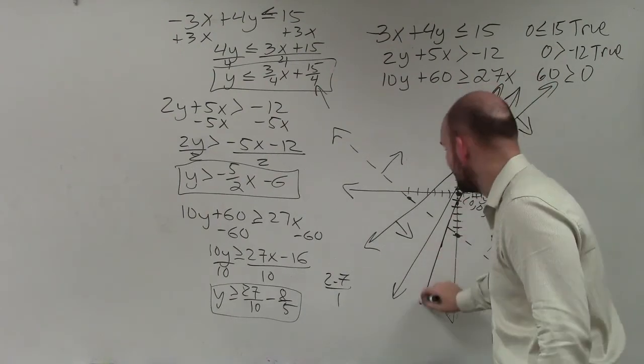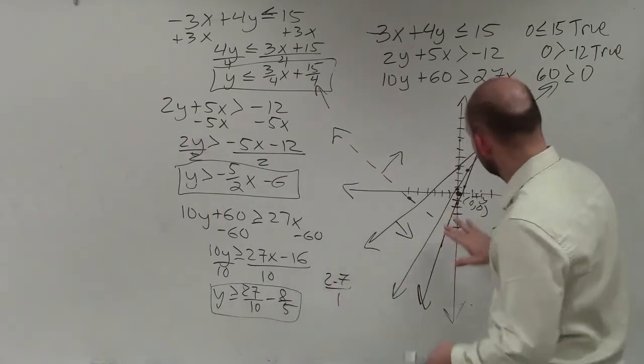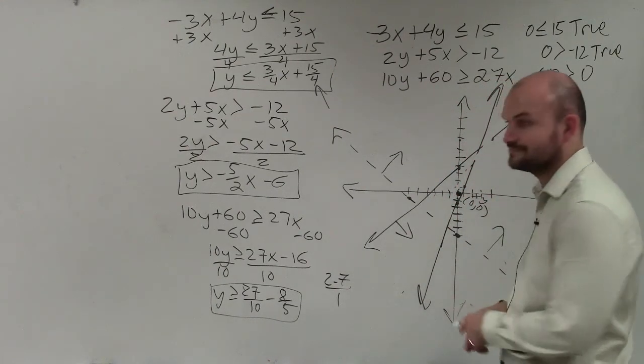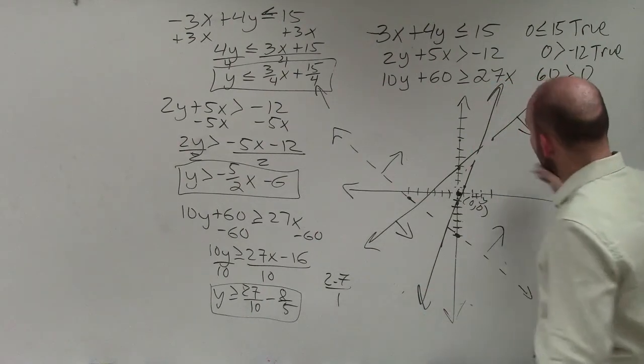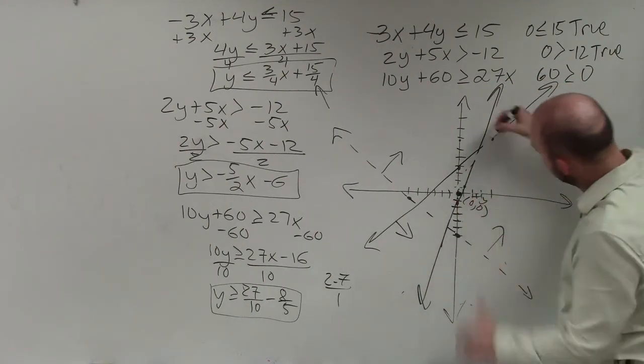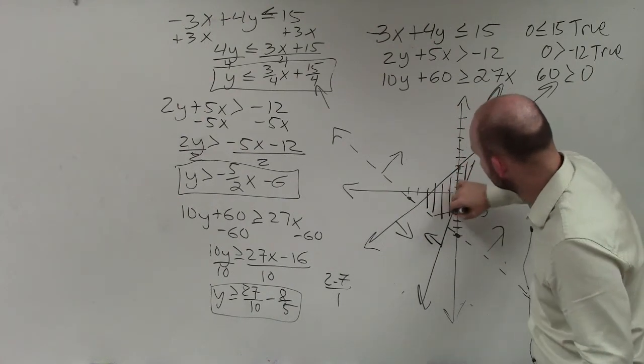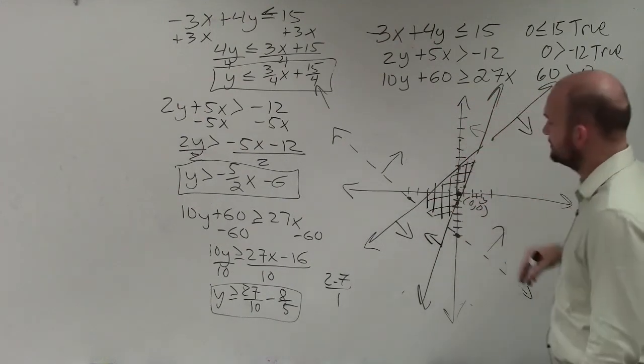My bad. I graphed that. That's a negative, right? So therefore, that line I graphed incorrectly. Thank you for letting me know. So that one is true, which is above my line. So I'm going to shade towards it. So therefore, you can see this feasible region is going to be this nice little triangle inside of here.